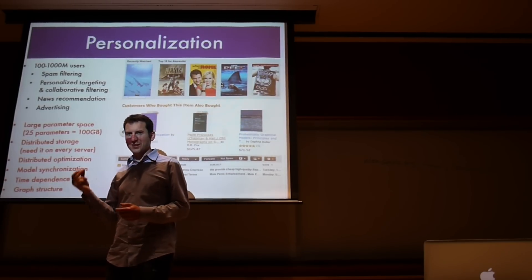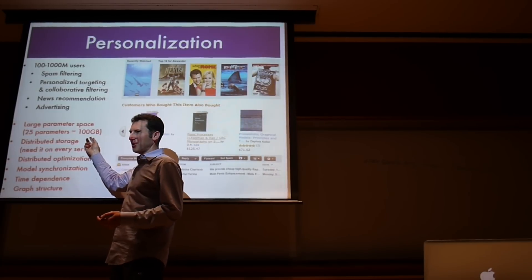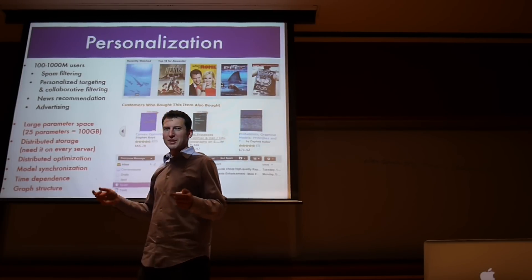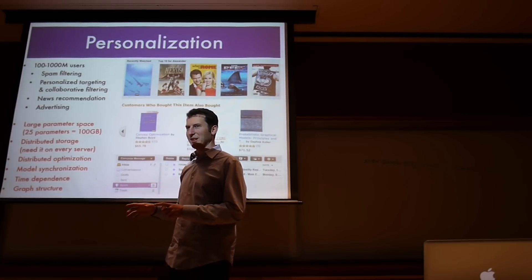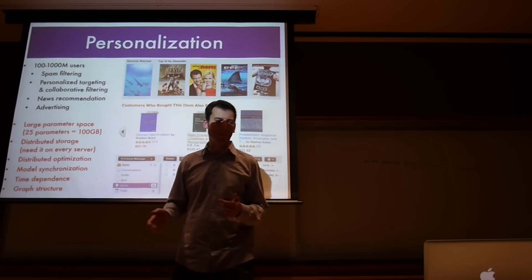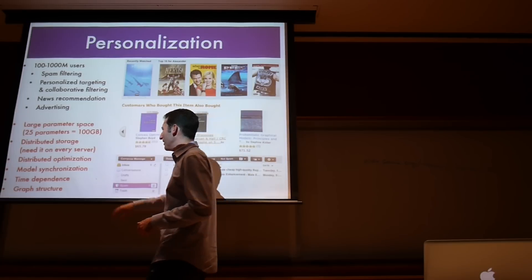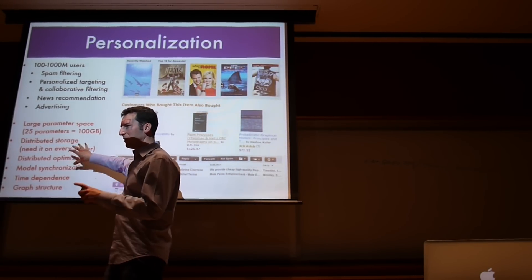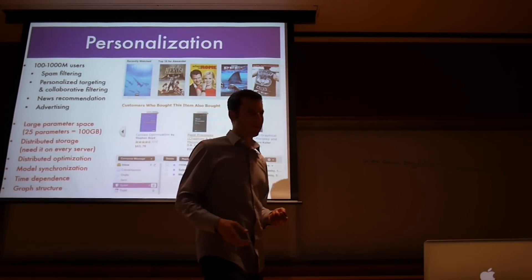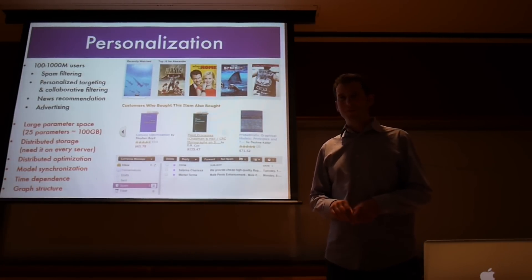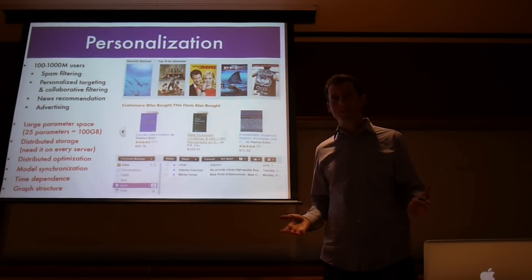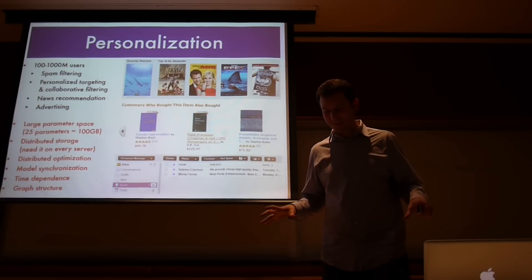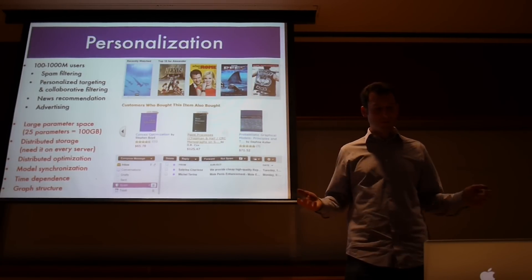If you want to filter content instantly, finding a machine with that much memory to do your mail server is a bad idea. You will need to distribute things or find efficient, interesting data structures. That's where the nice math comes in, where you can prove theorems. You want to distribute the optimization part, synchronize the model, and do a lot of other things. Maybe my spam preferences will change over time, so you really want to have a personalized model and distribute it.